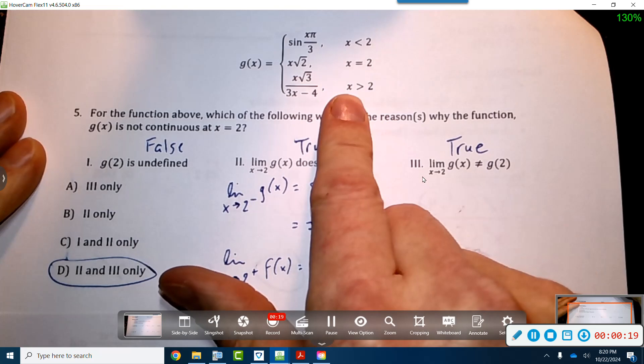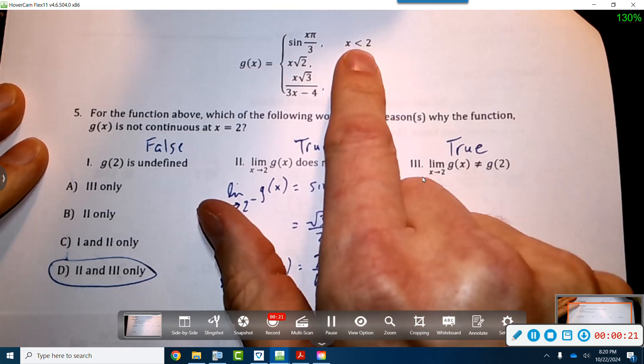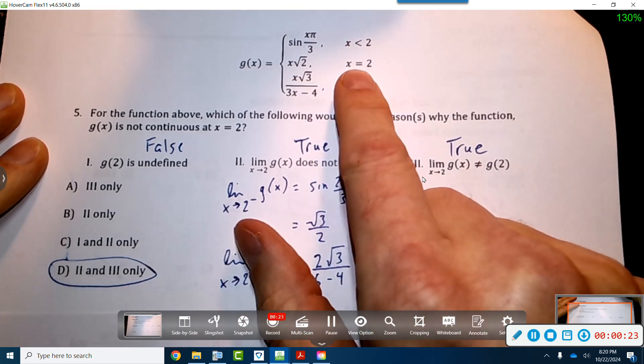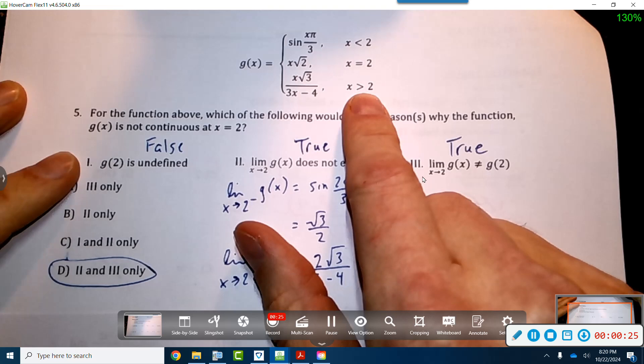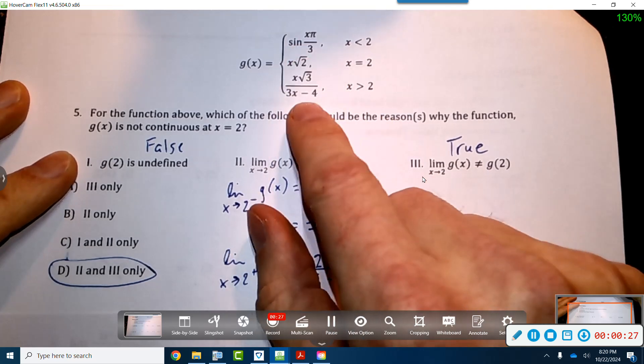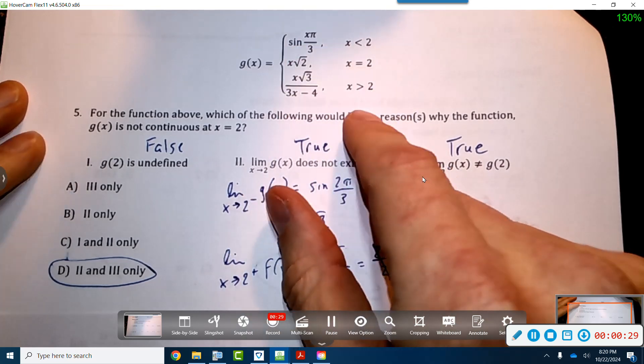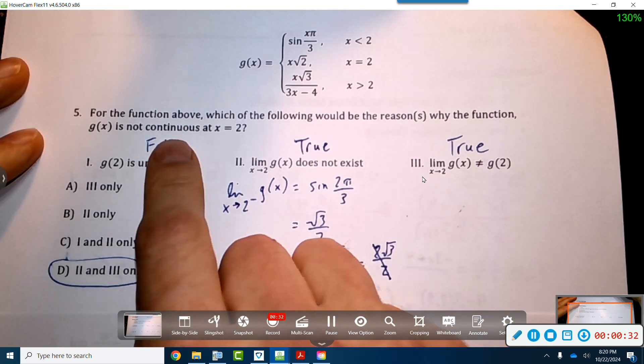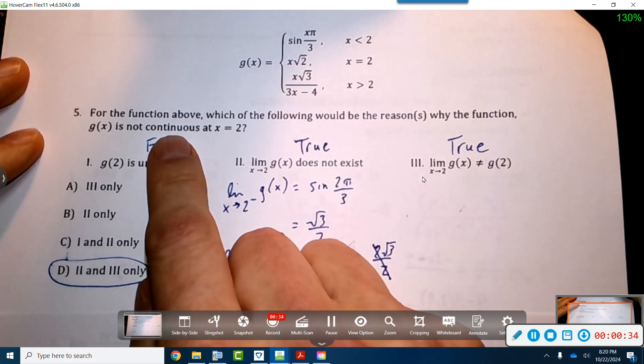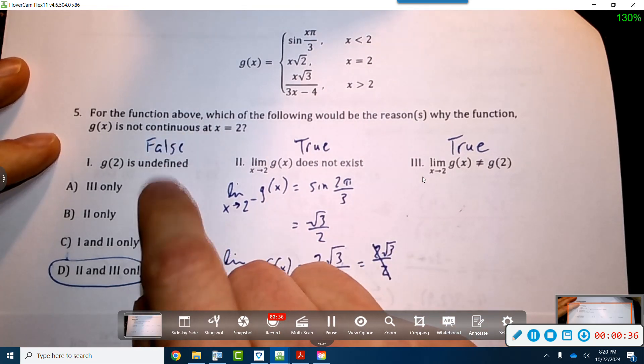We've got this piecewise function here, and it looks like this is to the left of 2, this is at 2, and this is to the right of 2. So we don't know if they all equal each other. You'd have to plug it in, but it's definitely not continuous. So we know it's not continuous, so why is that the case?